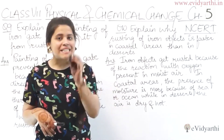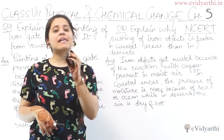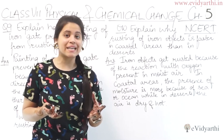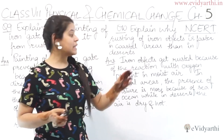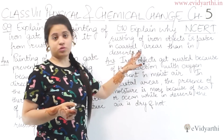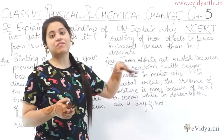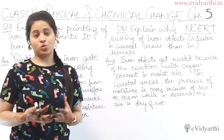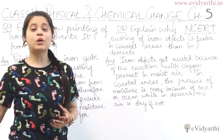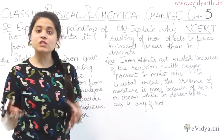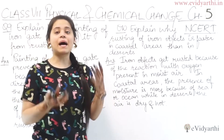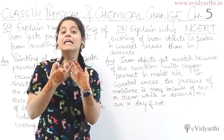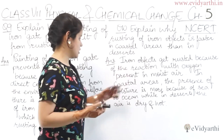To understand this, you need to know the basic concept of rusting of iron objects — it requires moisture and air. Coastal areas will have more moisture as compared to deserts. Simply, where there is more moisture, there will be more rusting.